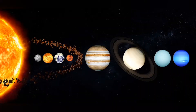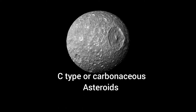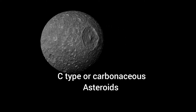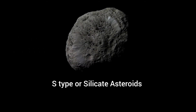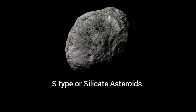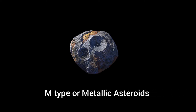The asteroid belt consists primarily of three categories of asteroids: C-type or carbonaceous asteroids, which are carbon-rich; S-type or silicate asteroids, which are silicon-rich; and M-type or metallic asteroids, which are metal-rich, containing metals like iron and nickel.